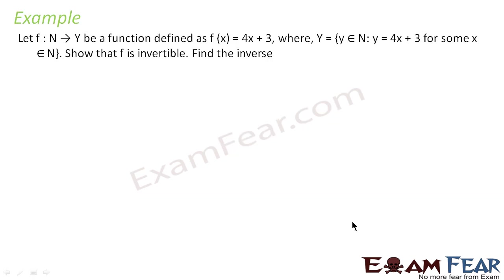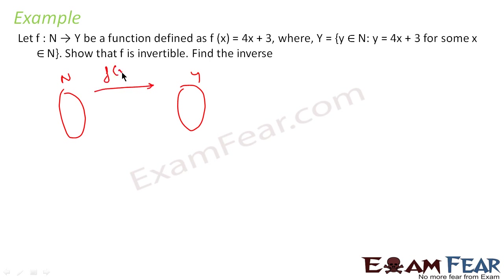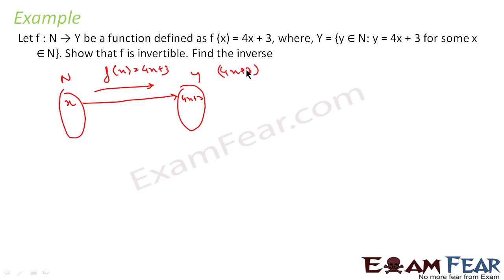We'll take an example. There's a function from N to Y, where N is the set of natural numbers and Y is defined here. This function is f(x) = 4x + 3, meaning for every x it gives 4x + 3. So if you take x = 1, this gives 4 into 1 plus 3, which is 7.